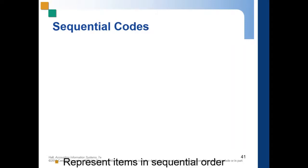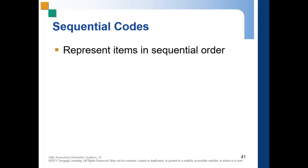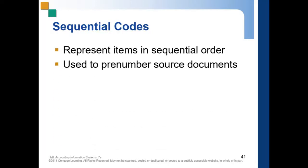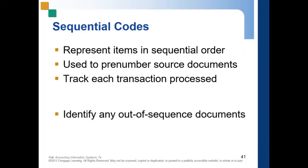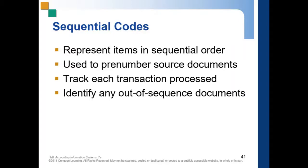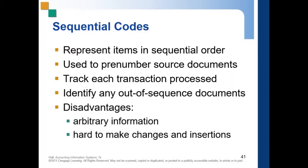There are different kinds of codes. First, we have sequential coding, wherein it represents items in sequential order. It is used to pre-number source documents, track each transaction process, and identify any out-of-sequence documents. The disadvantage is that the information is arbitrary and it is hard to make changes and insertions.